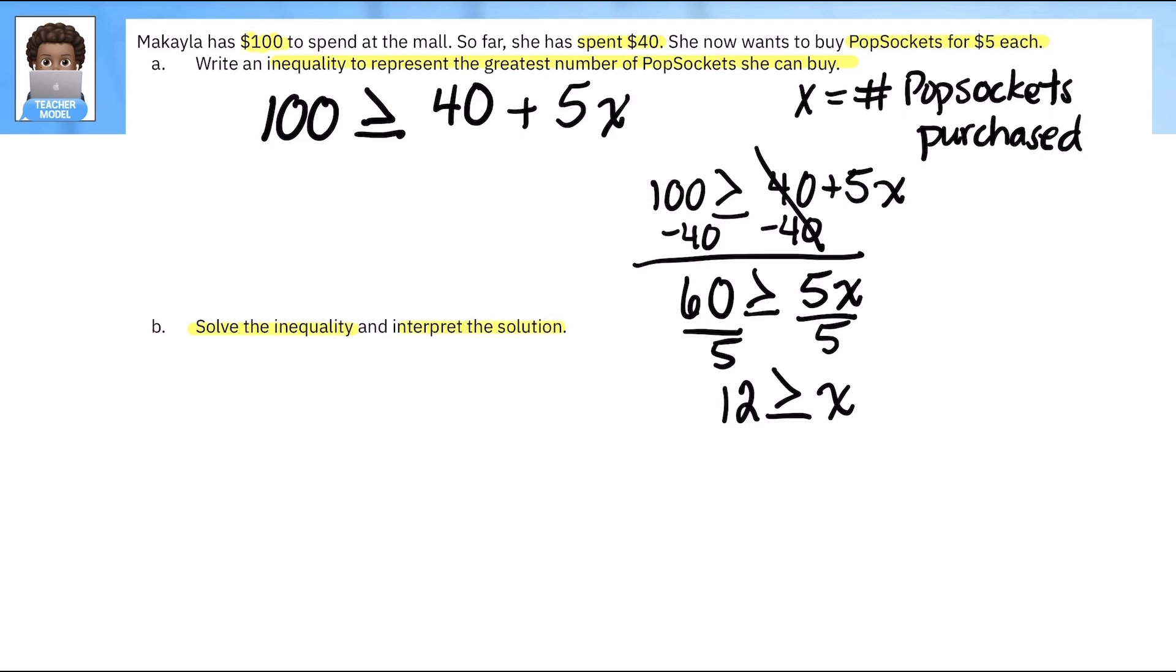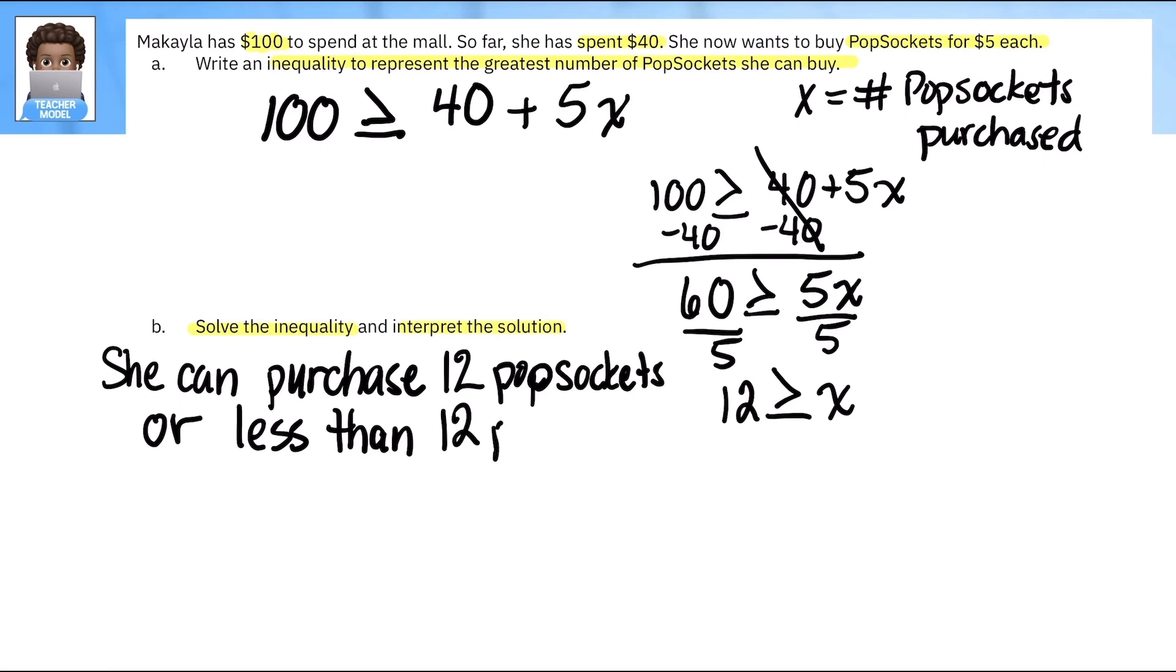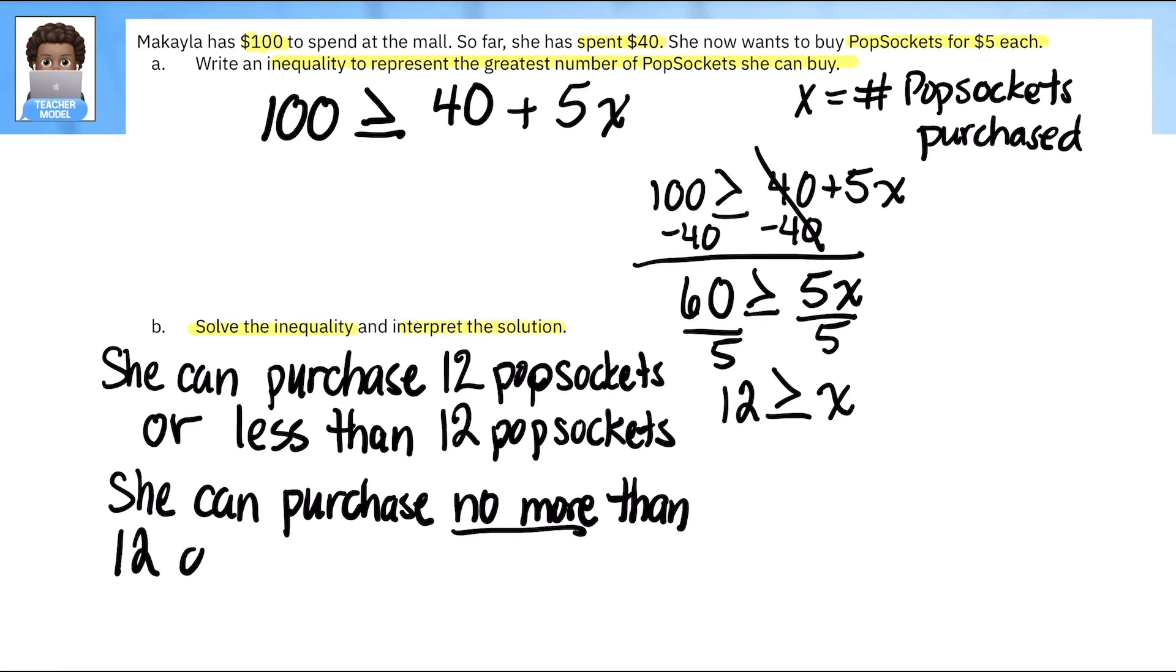So what does this mean? Since we said that X be the number of popsockets she purchased, that means that she can purchase numbers that are less than or equal to 12. She can purchase exactly 12 popsockets or less than 12. That's what X, that's what our solution means in this case. She can purchase no more than 12 or she will not have enough money.